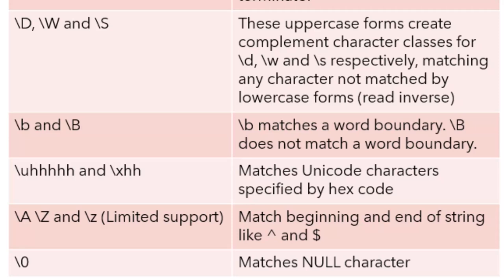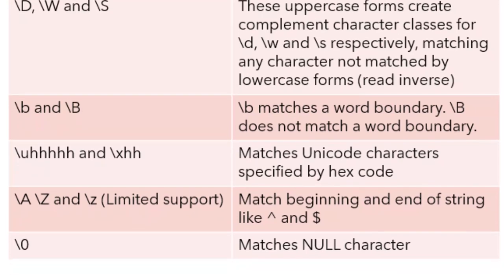Backslash small b and backslash capital B represent word boundary and anything except a word boundary respectively. Word boundary means the start and end of a word in the input string. Backslash capital B would match anything in between a word except its two outermost letters. We also have backslash u with a four-digit hexadecimal code and backslash x with a two-digit code to specify a Unicode character. Backslash capital A, backslash capital Z, and backslash small z are supported in few languages as counterparts of caret and dollar sign for input boundary assertions. Backslash zero specifies the null character.